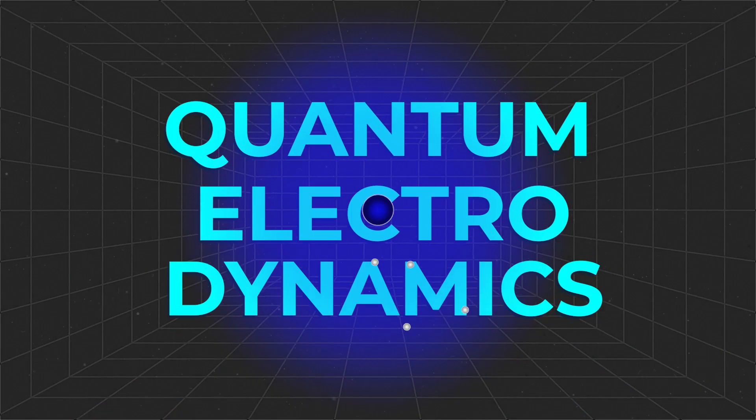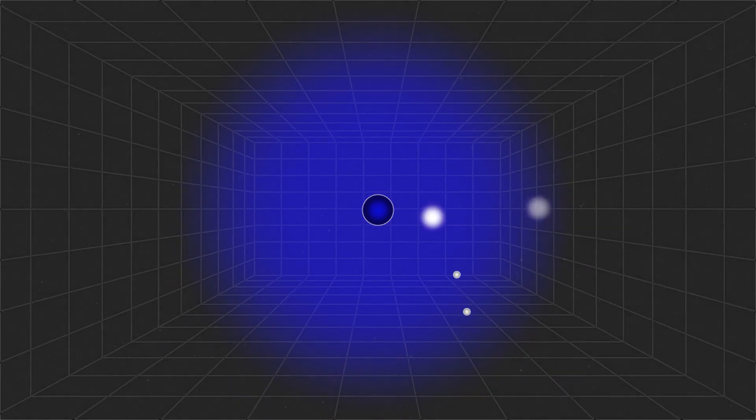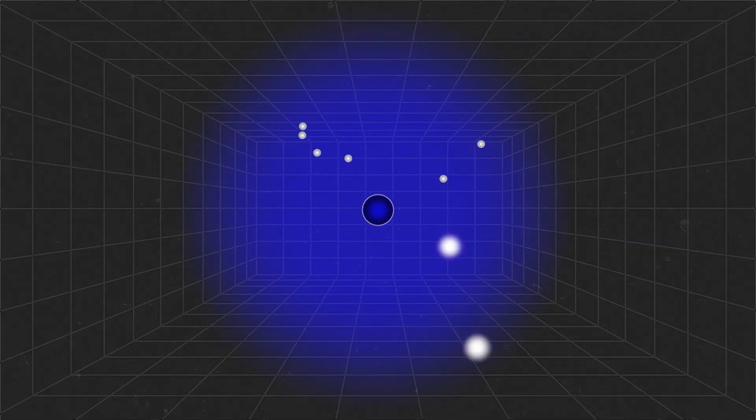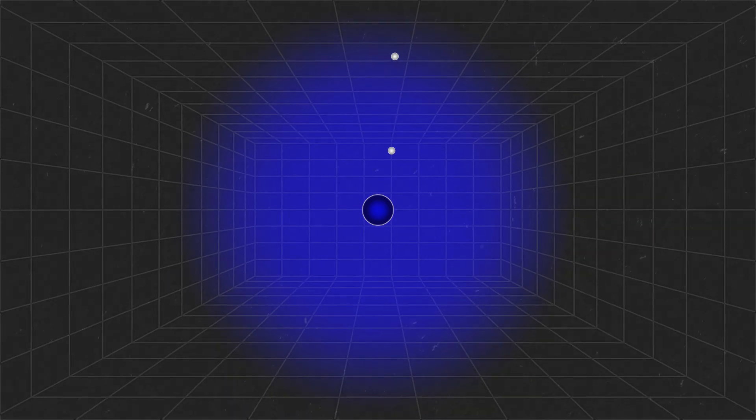In quantum electrodynamics, the vacuum isn't just empty space. Instead, it can be thought of as a sea of virtual particle-antiparticle pairs that constantly pop in and out of existence.